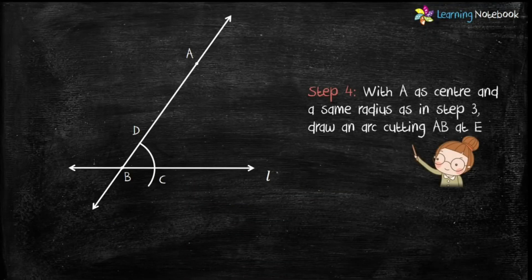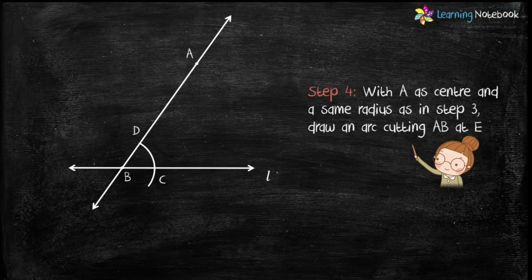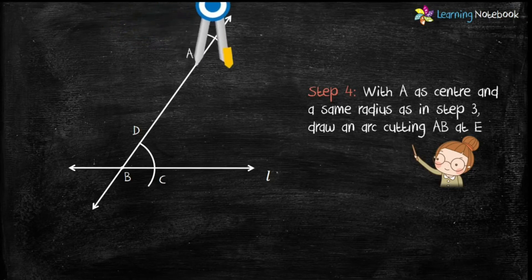Students, in step 4, with A as center and the radius same as in step 3, draw an arc which cuts the line AB at point E.